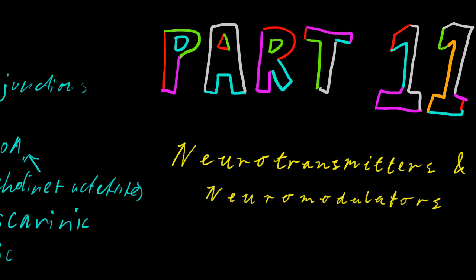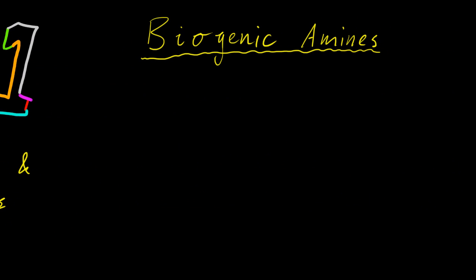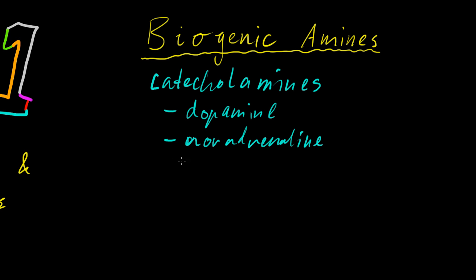Alright, I want to talk about biogenic amines. This is a class of particular neurotransmitters. There are a couple of types. There are the catecholamines. This is a separate group where we have dopamine, and we have noradrenaline, and we have adrenaline.